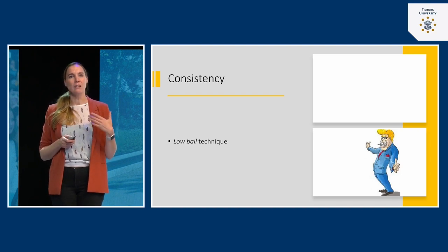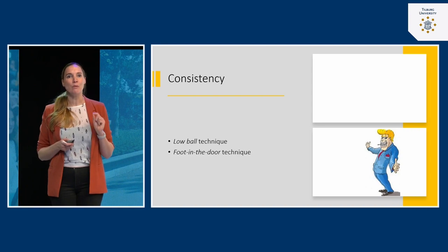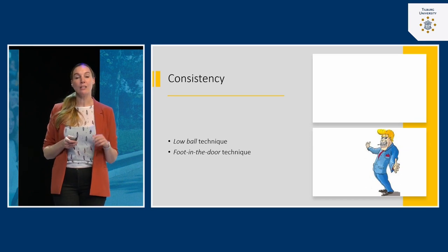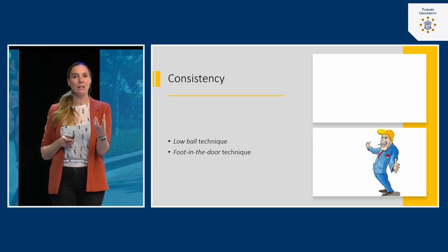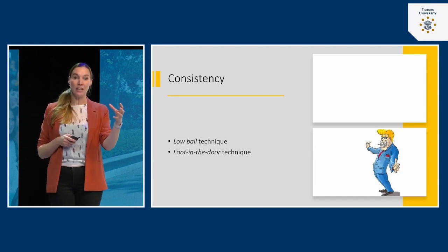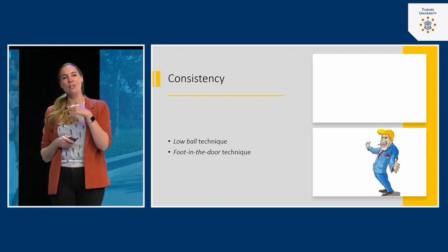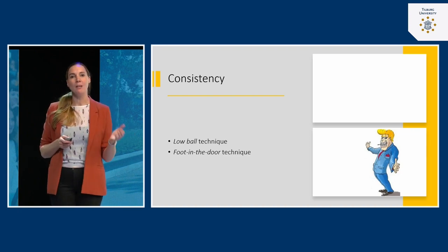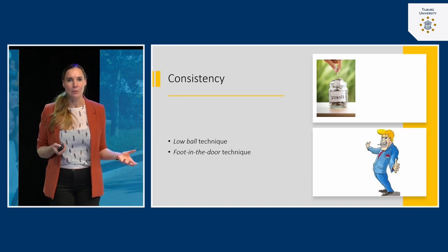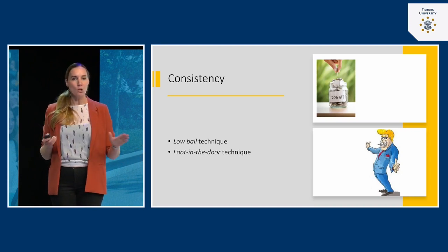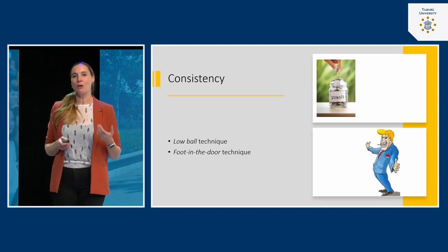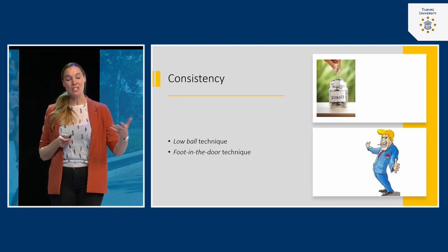Another technique related to this desire for consistency is the foot-in-the-door technique, which is similar to the low-ball technique but different. In the foot-in-the-door technique, you agree to do one small thing, and then get a second, much bigger request. Because you said yes to the small thing, you're inclined to say yes to the bigger thing. For example, if someone at your doorstep asks for a small donation — some spare coins for a good cause — most people say yes.